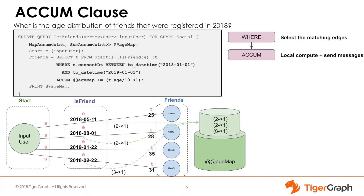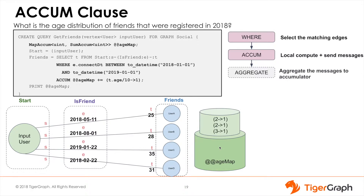The values remain in the bucket and the final value of the accumulator cannot be accessed until the ACCUM clause is complete. Then the data is aggregated, and finally the data is stored into the accumulator and can be accessed.